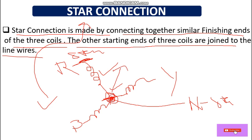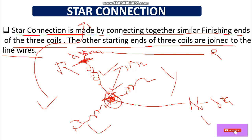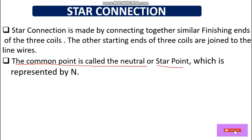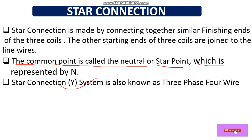The finishing ends of all three coils are joined at one point, and the starting ends of the coils are where we connect the phase supply wires R, Y, B. This connection is called a star connection. The common point is called the neutral or star point, represented by N.